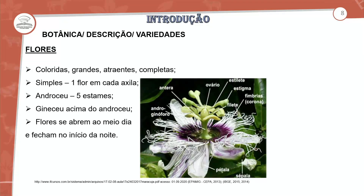A característica botânica da parte floral apresenta coloração variada, grande e atraente. São flores completas, simples, uma flor em cada axila. O androceu possui cinco estames e o gineceu está acima do androceu. As flores se abrem ao meio-dia e fecham no início da noite, possibilitando o processo de polinização.